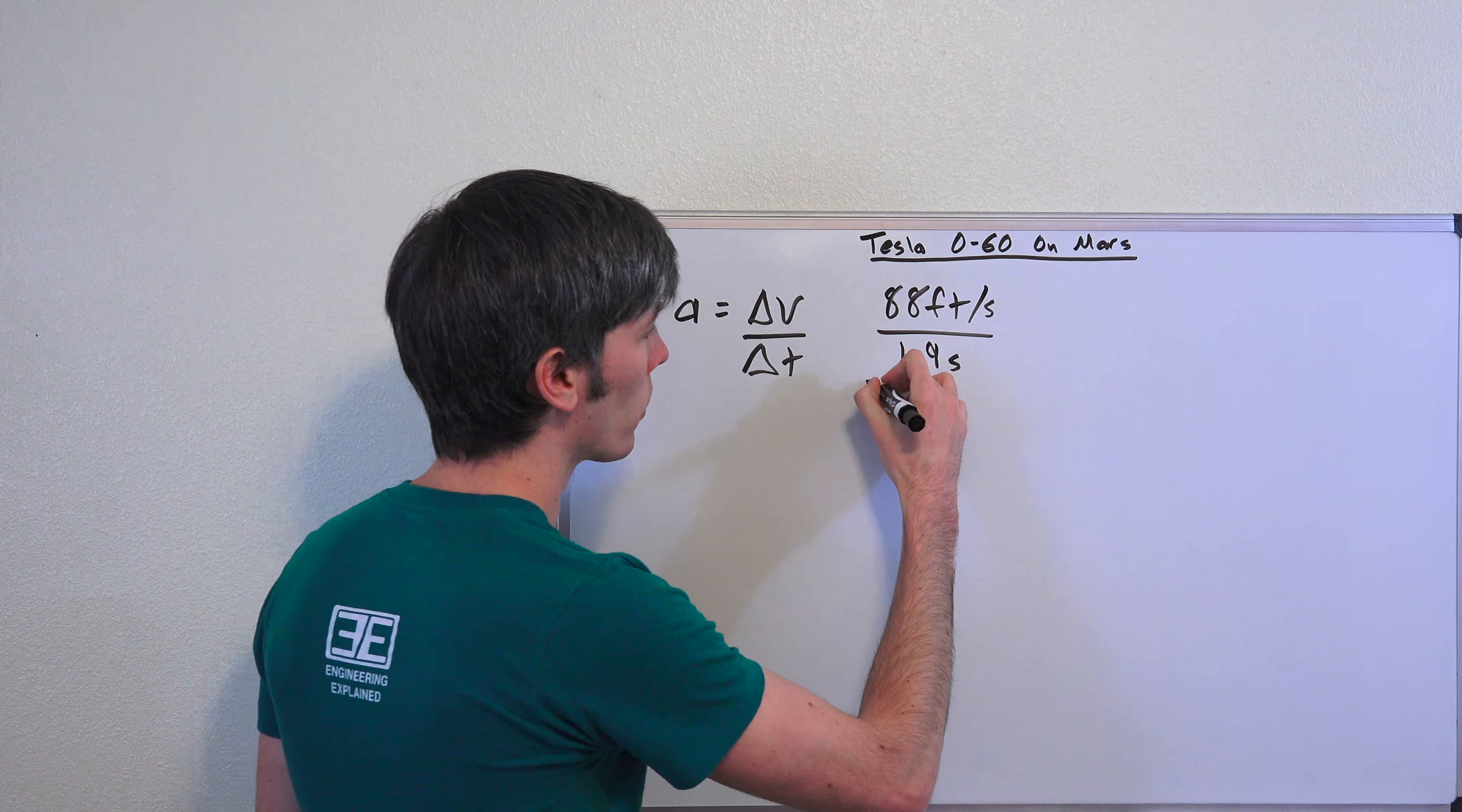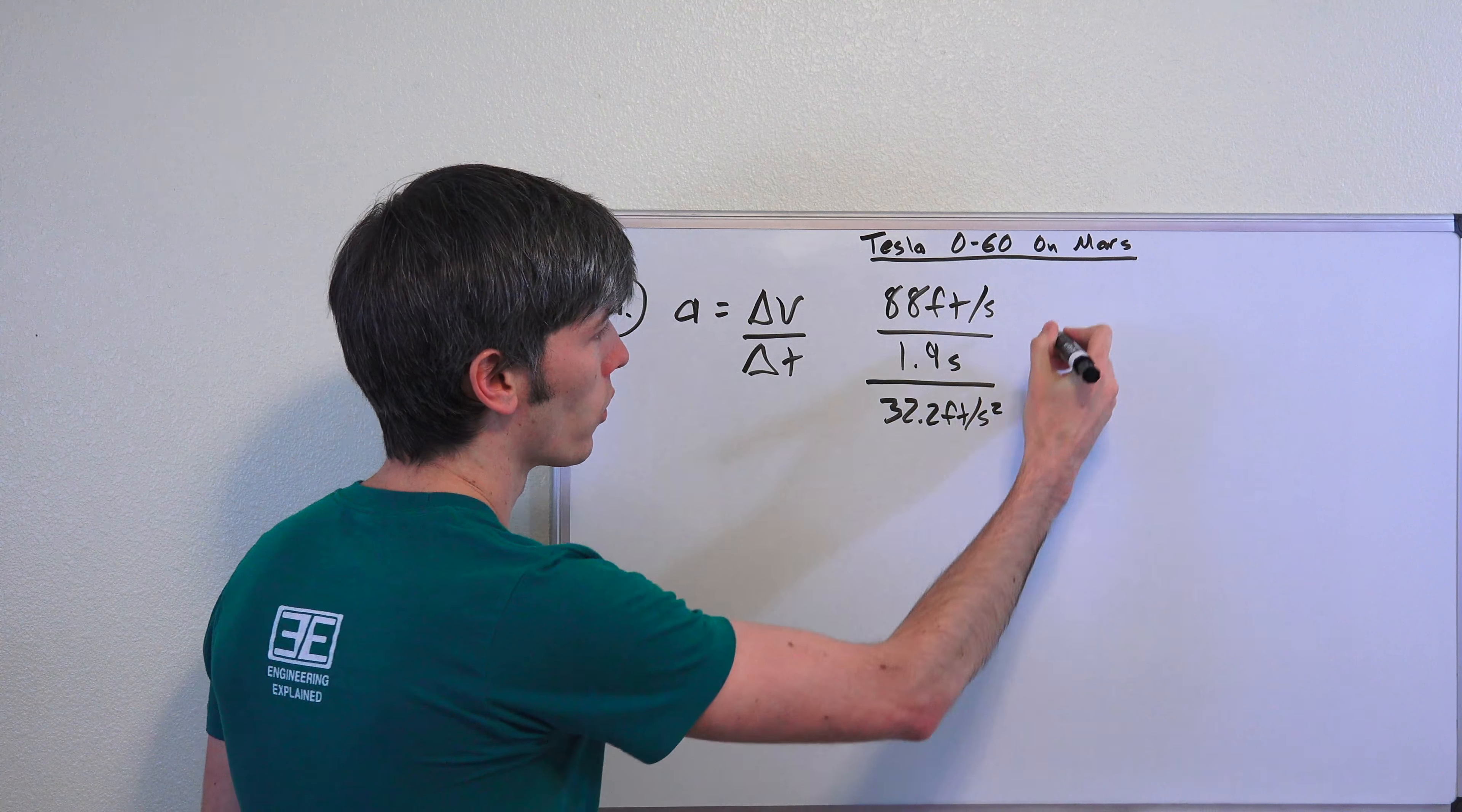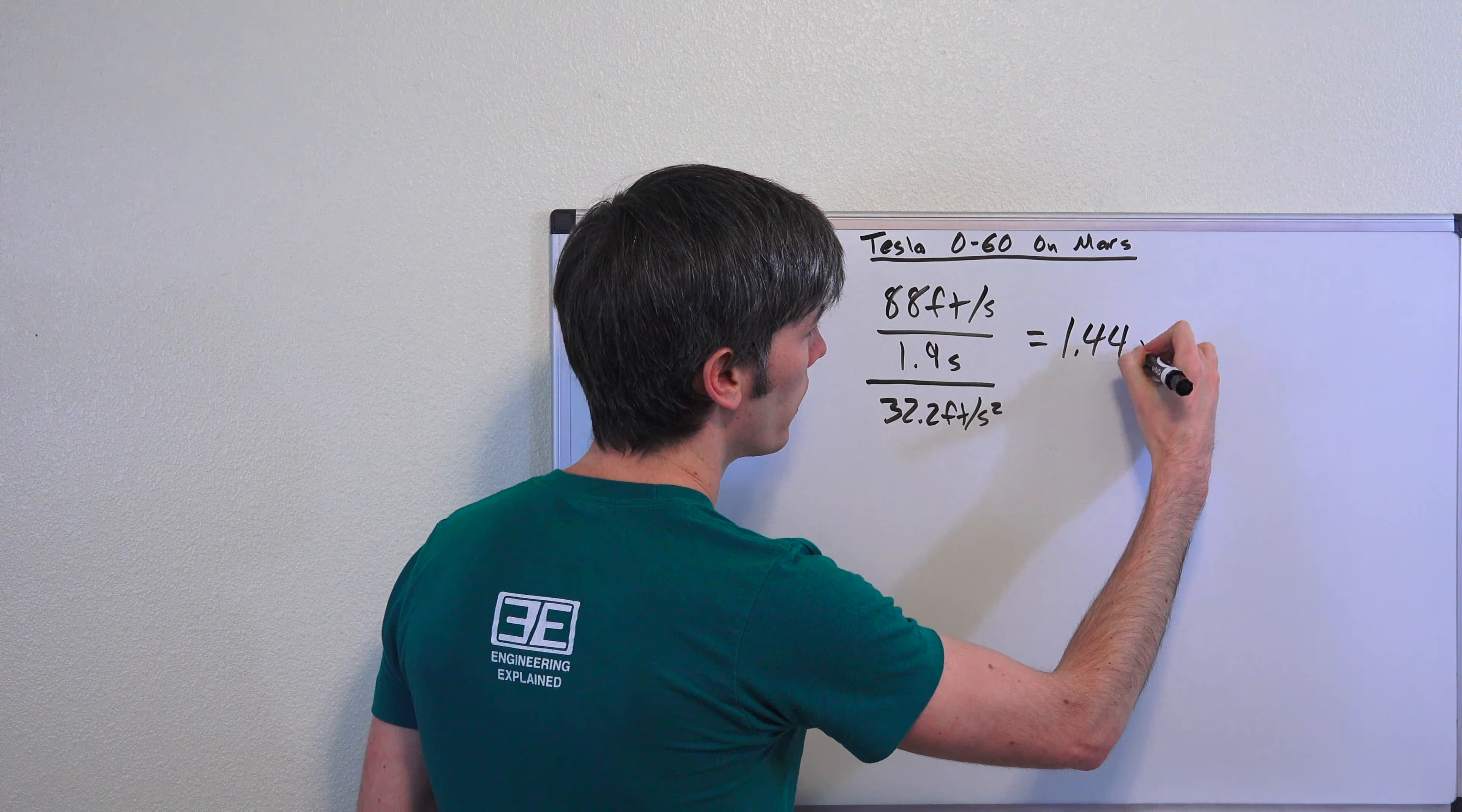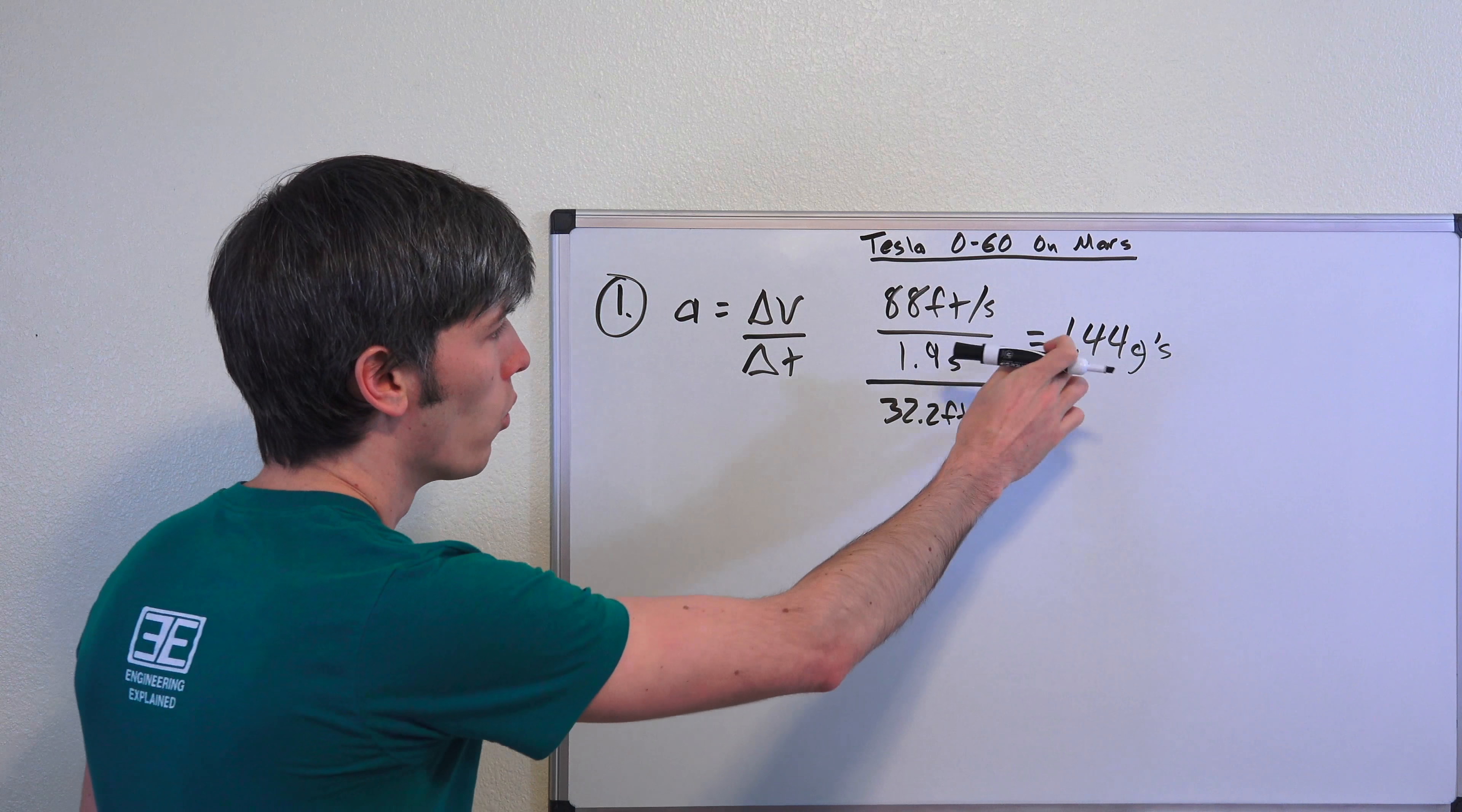So 1.9 seconds there. Now this will give us units in feet per second squared. We're going to divide it by gravity, which is 32.2 feet per second squared, so we can get this kind of unitless—it's going to be in G's. And so this will give us 1.44 G's.